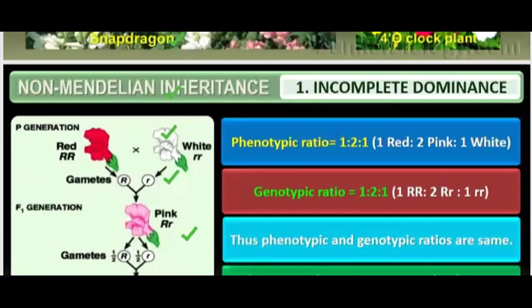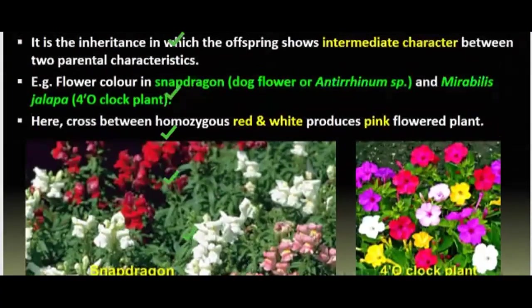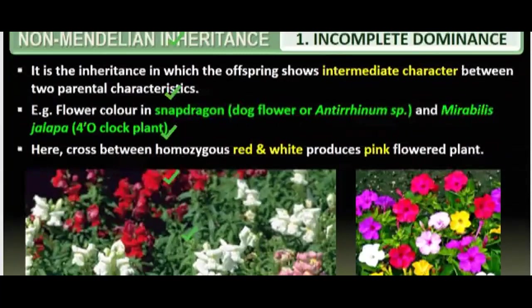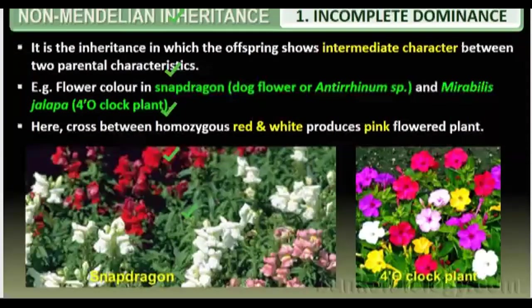First of all, what is incomplete dominance? We have learned about dominant and recessive characteristics. Incomplete dominance is the inheritance in which the offspring shows an intermediate character between the two parental characteristics. The offspring cannot exhibit only the dominant parent's character, and not only the recessive parent's character.